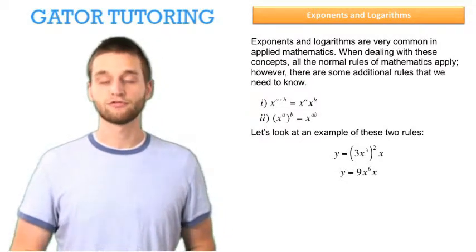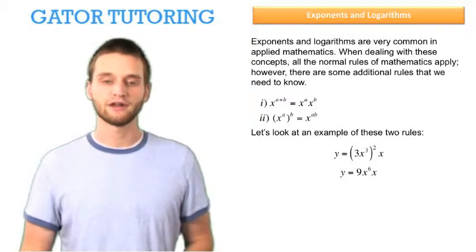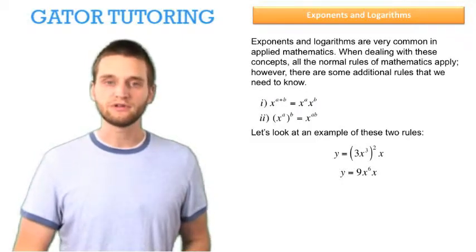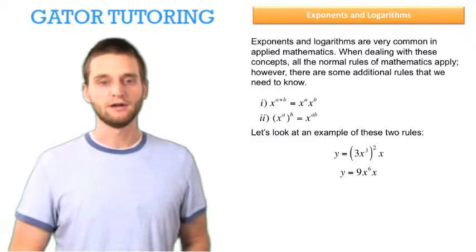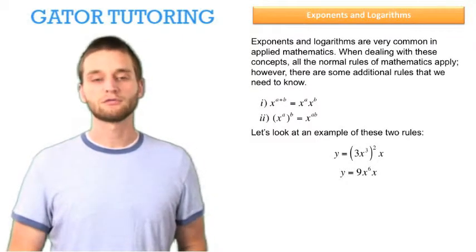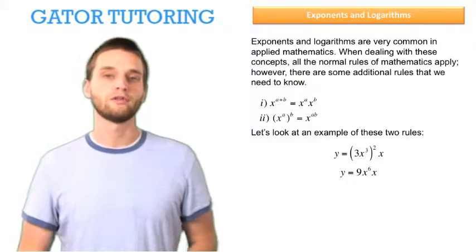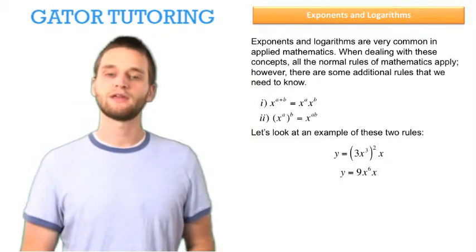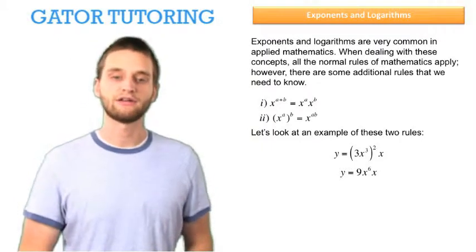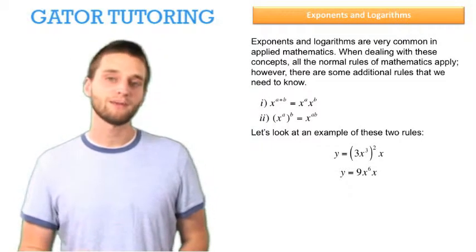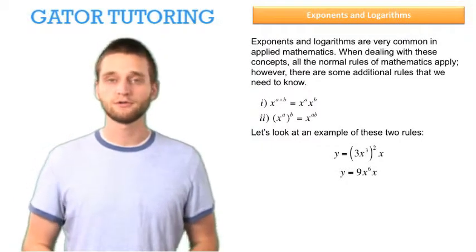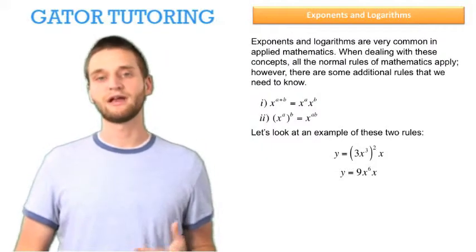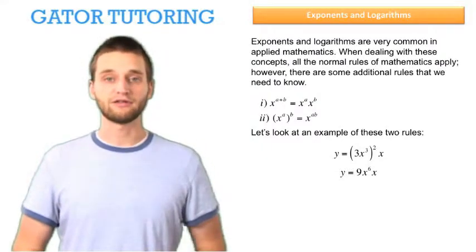So first the 3 gets squared — 3 squared is 9 — and the x cubed gets squared. But from our second rule, we know that x cubed squared is the same thing as x raised to the 3 times 2. Well, 3 times 2 is 6, so this is the same thing as x raised to the 6.